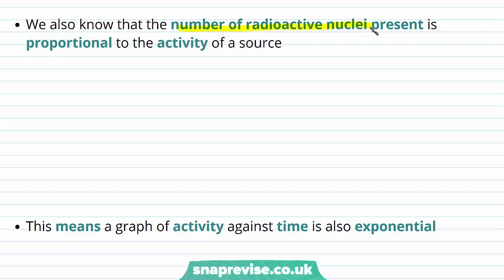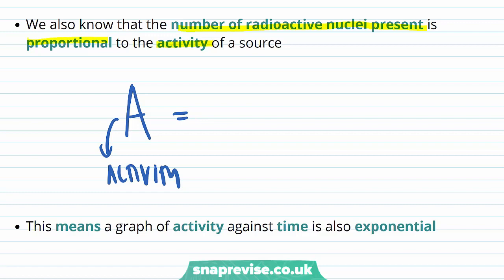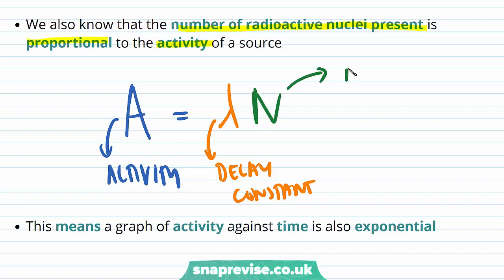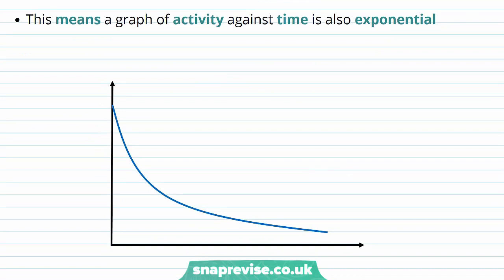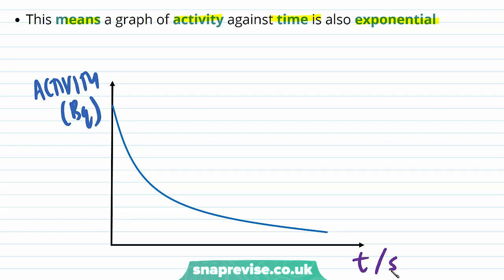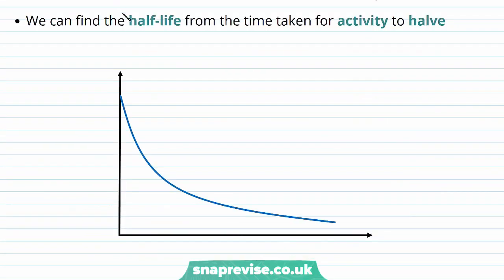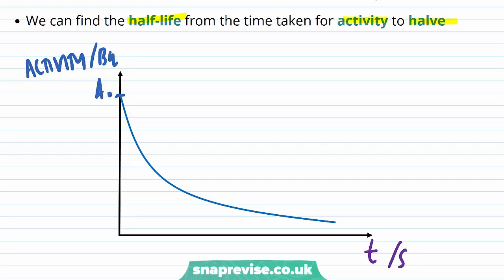We also know that the number of radioactive nuclei present is proportional to the activity of a source. The activity A is equal to the decay constant lambda — which is a constant — times the number of radioactive nuclei present, N. This means that a graph of activity against time is also going to be exponential. On the y-axis we have activity measured in becquerels, and on the x-axis time measured in seconds. The half-life can be found from the time taken for the activity to halve. So if the initial activity is A₀, the time taken for it to halve to A₀ over 2 will be the half-life.